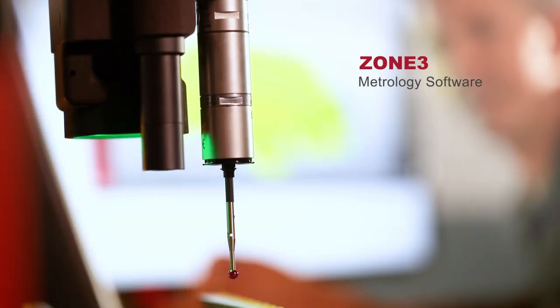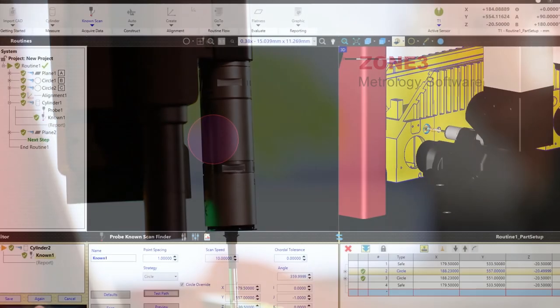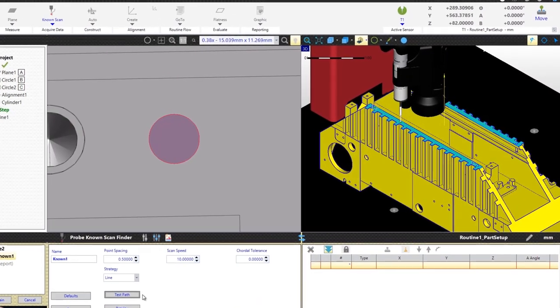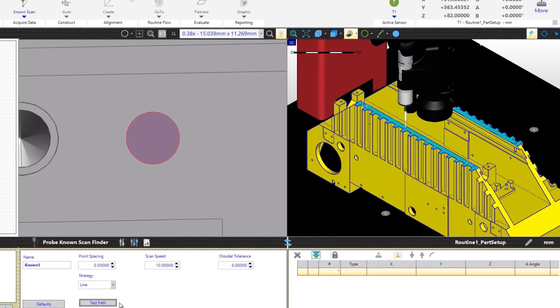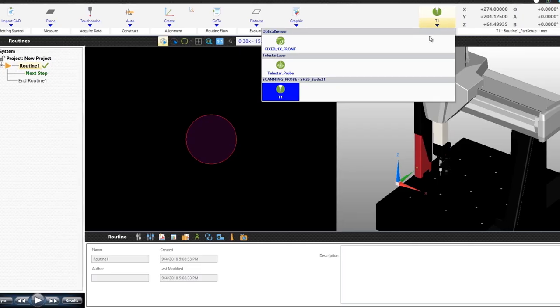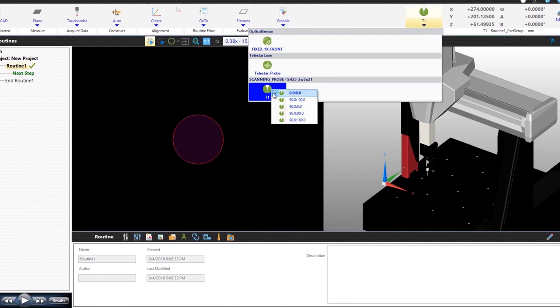QVI Zone 3 metrology software is designed for 3D multi-sensor measurement with all sensor types operated the same way and available in any combination or sequence. User options and experiences are virtually identical regardless of which sensor is selected.